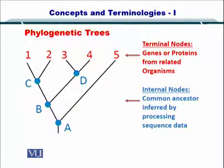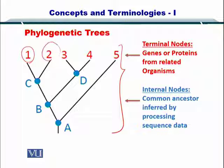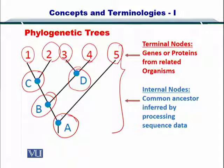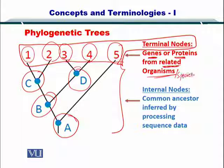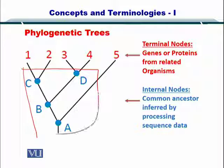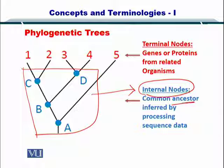The output from such studies is a phylogenetic tree, as you can see in this slide. This phylogenetic tree includes 5 sequences taken from different species and then linked together through C, D, B and A. The 5 sequences are called the terminal nodes. These can be the genome sequences or the protein sequences from related organisms or species. Here at the bottom are your internal nodes, which are the common ancestors as inferred by processing the sequence data.